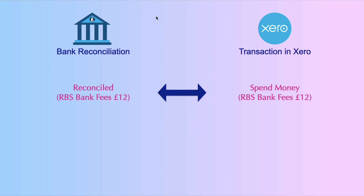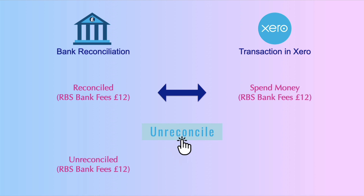Before we finish, let me explain this one more time. In Xero, we have our bank reconciliation and we also have the transactions in Xero. Looking at the same transaction: we have RBS bank fees for £12. They are reconciled in the bank and the fees are also in Xero as a spend money transaction, with a link between the two. Now, if we've realised there's a mistake and we choose to unreconcile, the transaction is back on the reconciliation screen as being unreconciled, and in Xero we also still have the transaction — it still exists. There just simply isn't a link between the two anymore.